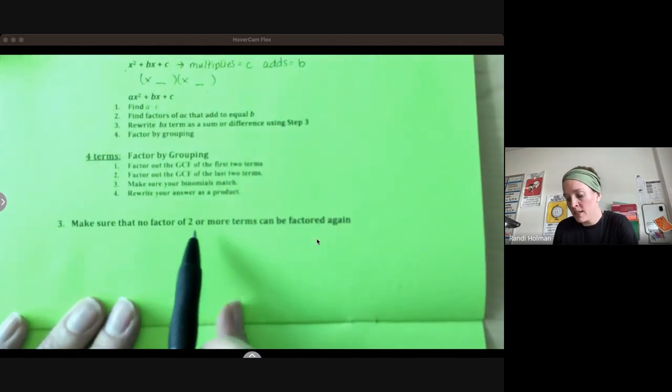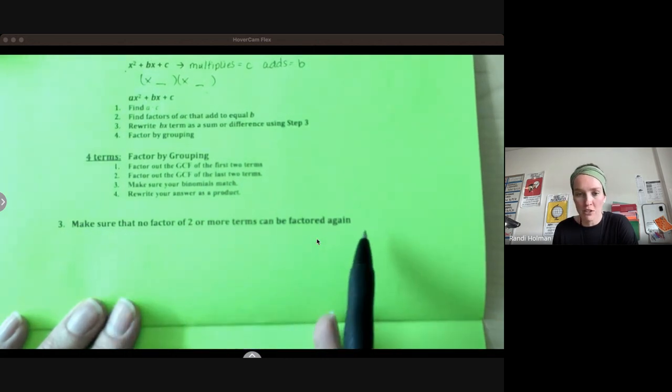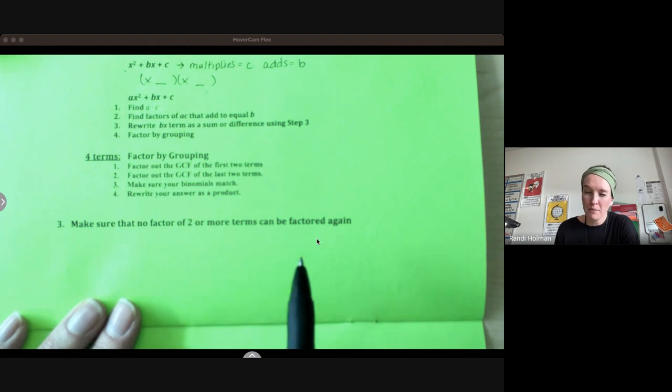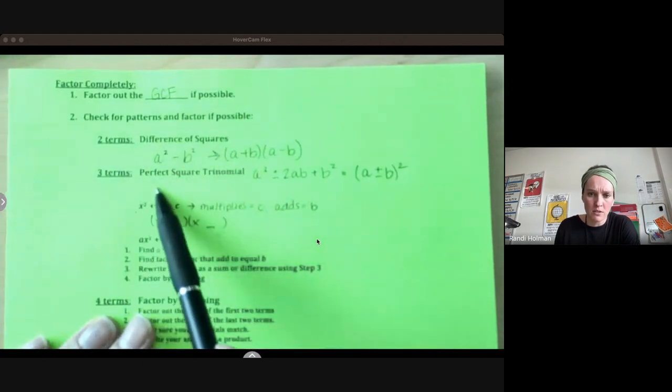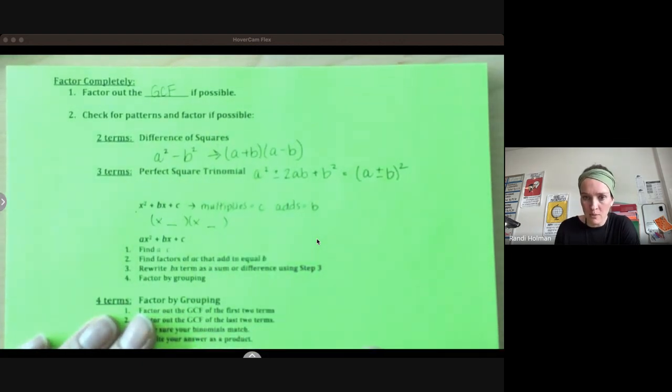And then make sure that no factor of two or more terms can be factored again. So you're checking for greatest common factors again. Just a nice good check. And then usually the only other one that we might end up with is this difference of squares. If you end up with a difference of squares, it's one of your factors. Make sure you factor that again as well.